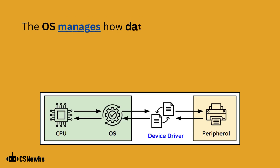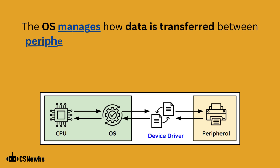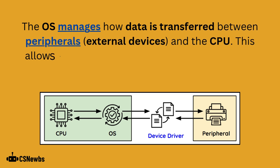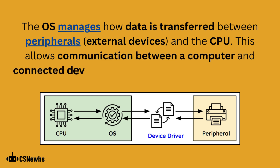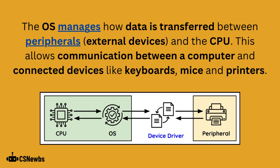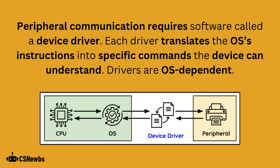The operating system manages how data is transferred between peripherals — the fancy word for external devices — and the central processing unit. This allows communication between a computer and connected devices like keyboards, mice, and printers. Peripheral communication requires software called a device driver. Each driver translates the operating system's instructions into specific commands the device can understand.